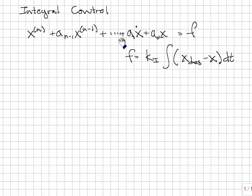Given a plant differential equation where the output is x and the input is f, let's let f be some constant, ki, times the integral of the difference between what we want, x desired, and the current measured value of x.